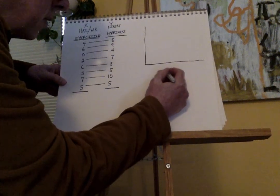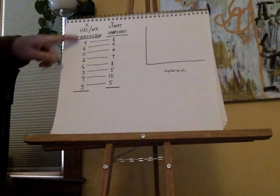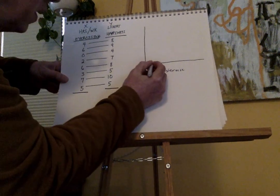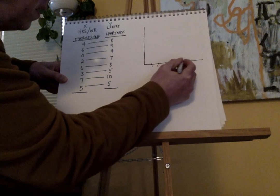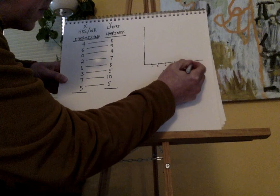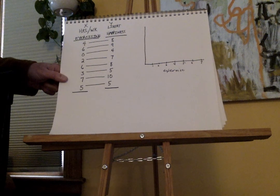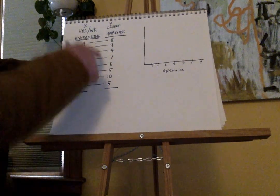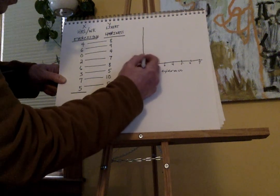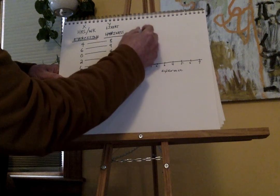Exercise is on the x axis and we need to go up to 7, so: 1, 2, 3, 4, 5, 6, and 7. I know that's a little bit small, but I want to leave some room for the other work. Our Likert scale goes up to 10: 1, 2, 3, 4, 5, 6, 7, 8, 9, and 10.